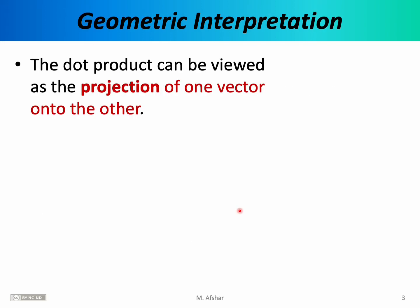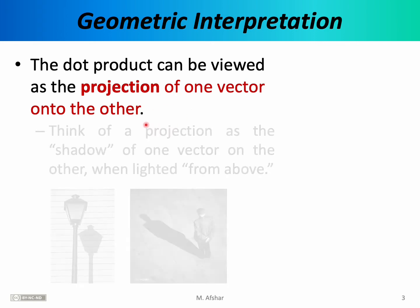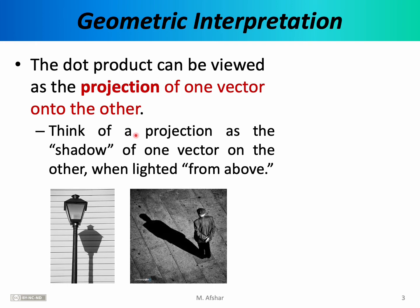On the previous slide, I gave you two equations to calculate the dot product of vectors, but I did not derive them. A full discussion of their derivation belongs in your math class, but it is helpful to have some geometric interpretations of the dot product. It turns out that the dot product can be viewed as the projection of one vector onto the other. You can think of a projection as the shadow of one vector on the other when lighted from above.